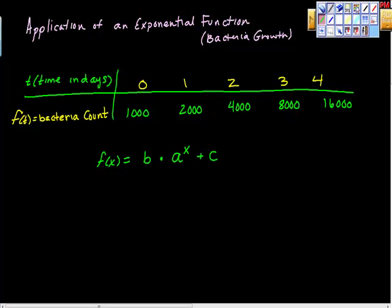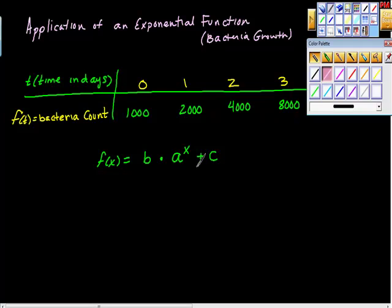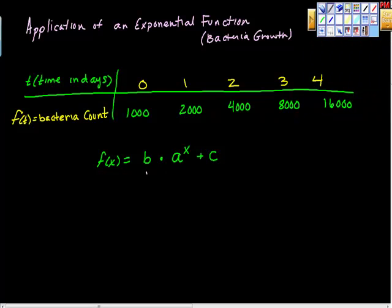Here are some really important things to remember, because people get these in reverse order and there's a couple things that people kind of screw up here. B is the initial value, or the initial amount. In this case, the initial value on day zero is 1,000. A is the growth factor.